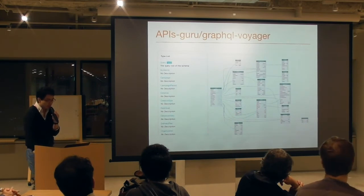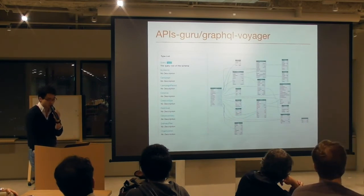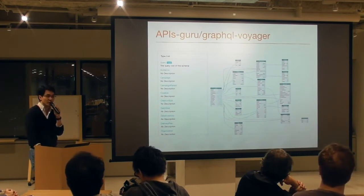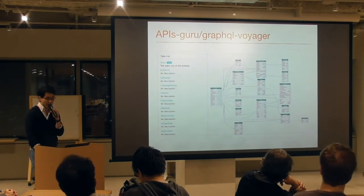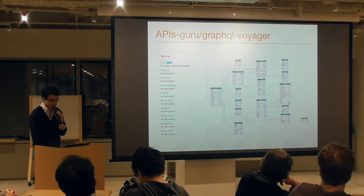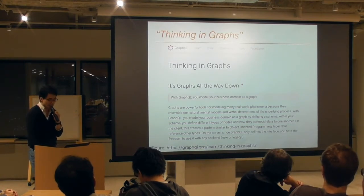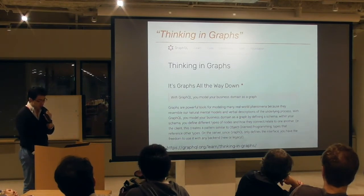One more thing — GraphQL Voyager is an interesting tool for visualizing schemas. It visualizes each graph's relationships with edges and nodes, enabling you to think about business logic in terms of graphs. Thinking in graphs is very important when building a GraphQL server, because a schema file is flattened but it is graphs all the way down. GraphQL Voyager helps you define your models as nodes and graphs.